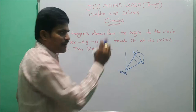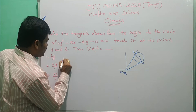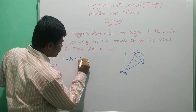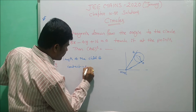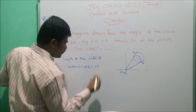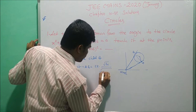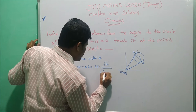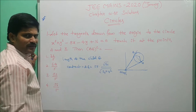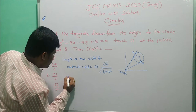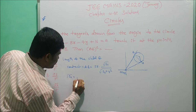To find the length of AB, we use the formula directly: the length of the chord of contact AB equals 2R × √S₁₁ / √(S₁₁ + R²). Now we find the radius and the length of the tangent.